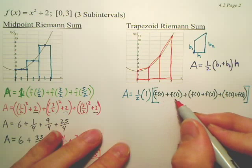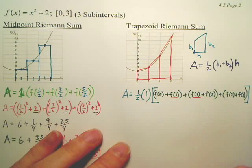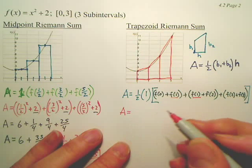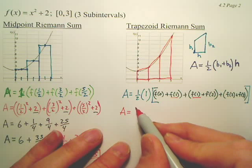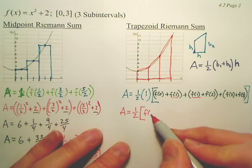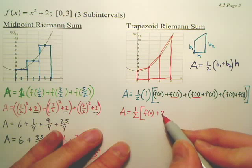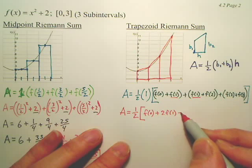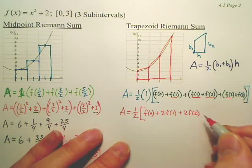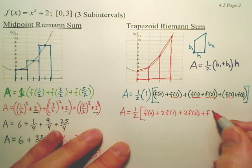Now, look real carefully. How many times do we have f of 1? Twice. I'm going to simplify this formula. Isn't this just going to be one half? Isn't it going to be f of 0 plus 2 f of 1 plus 2 f of 2?